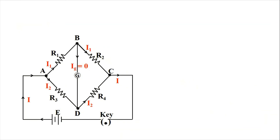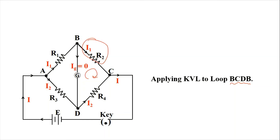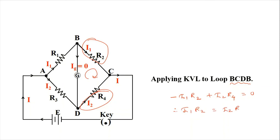Similarly, applying Kirchhoff's voltage law to loop BCDB: going in the direction of current through R2 gives minus I1·R2, and from C to D (opposing current direction) gives plus I2·R4, with no EMF source, so the sum equals zero. Rearranging gives I1·R2 = I2·R4 — this is Equation 2.